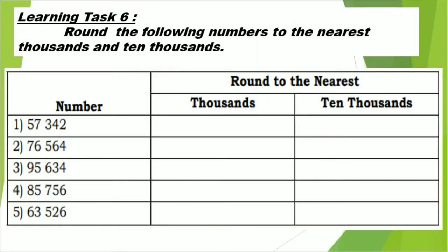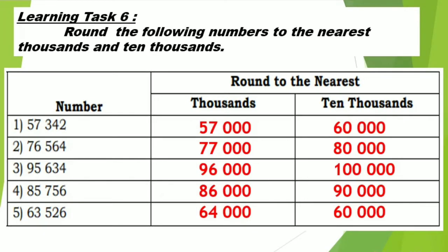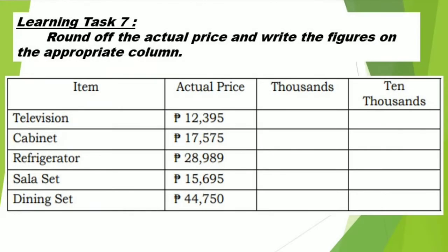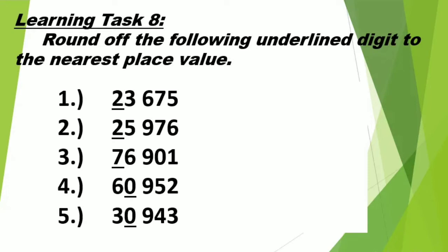Now let's try to answer Learning Task 6: round the following numbers to the nearest thousands and ten thousands. You are doing great! Let's try another one — Learning Task 7: round off the actual price and write the figures in the appropriate column. You are now good at rounding off numbers, so we're moving on to Learning Task 8: round off the following underlined digits to the nearest place value.